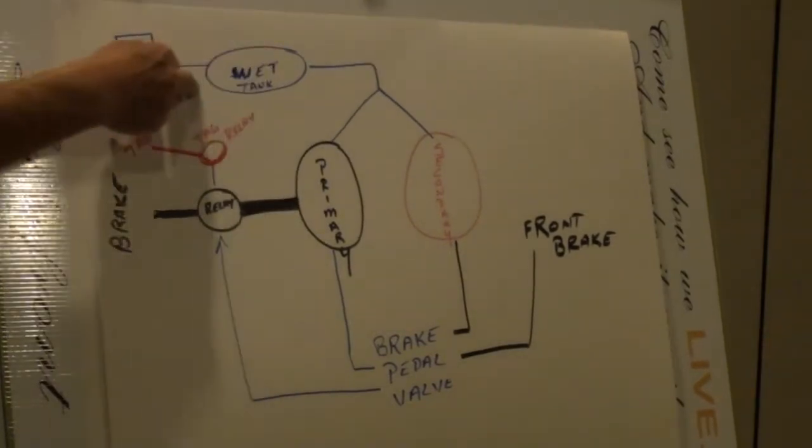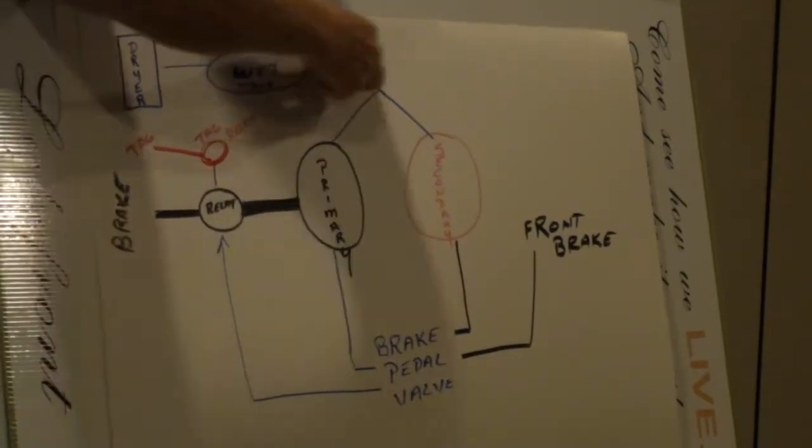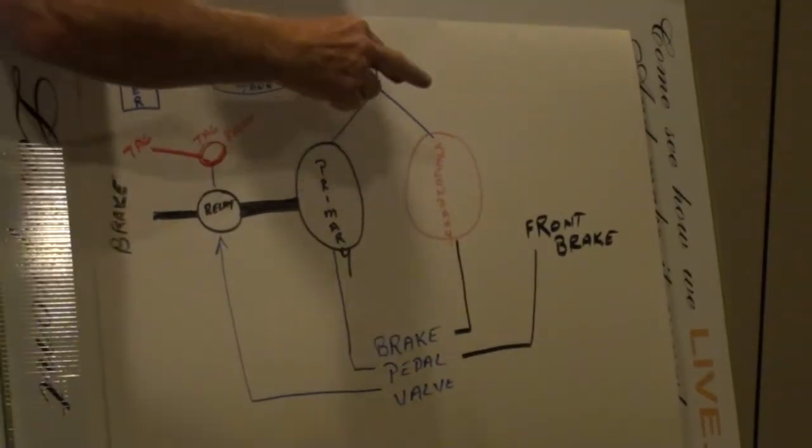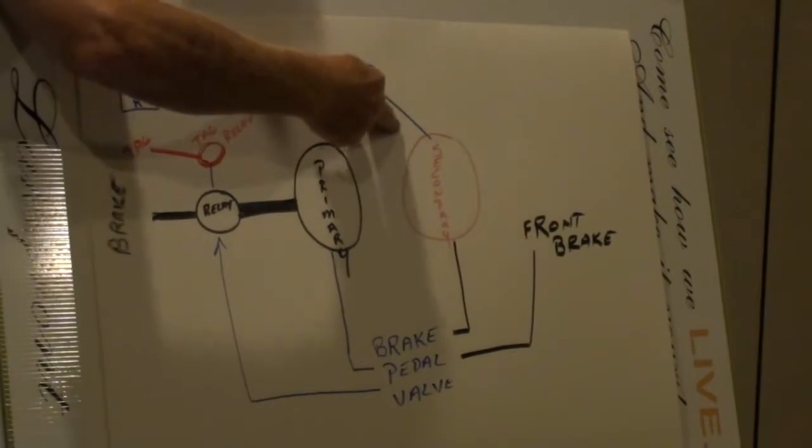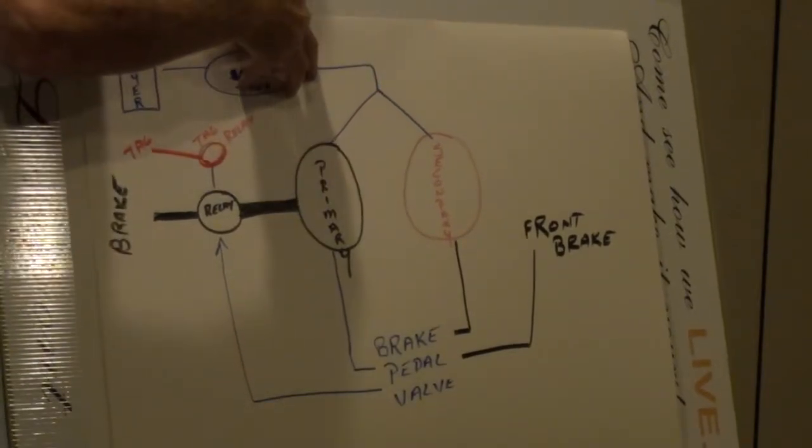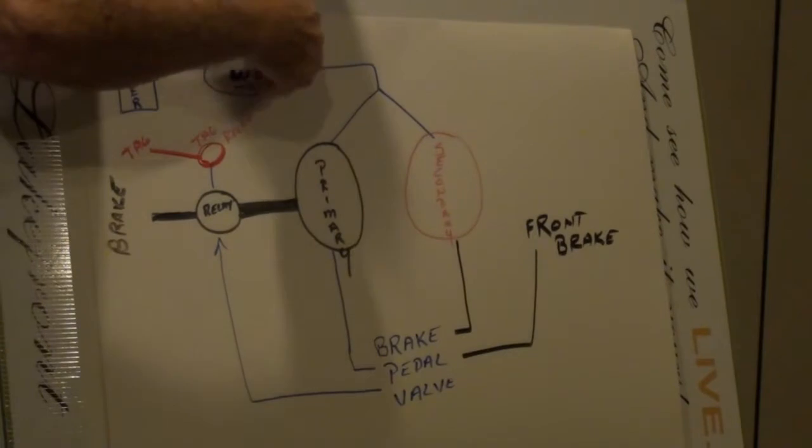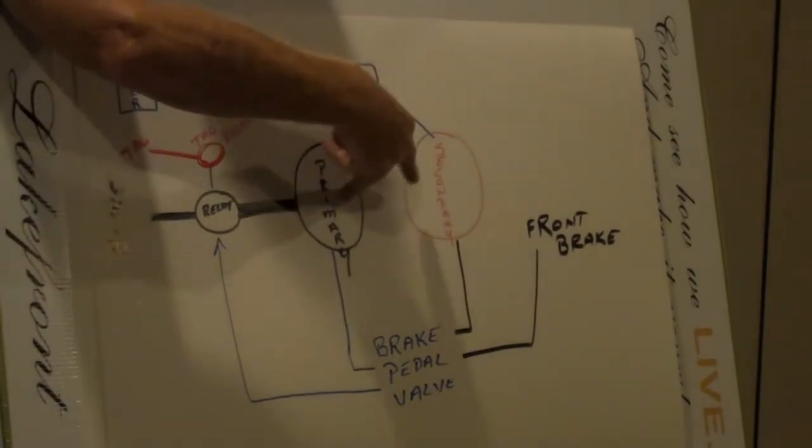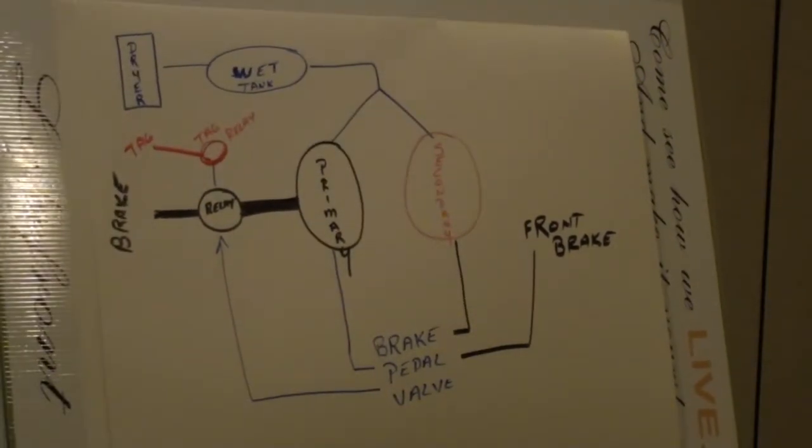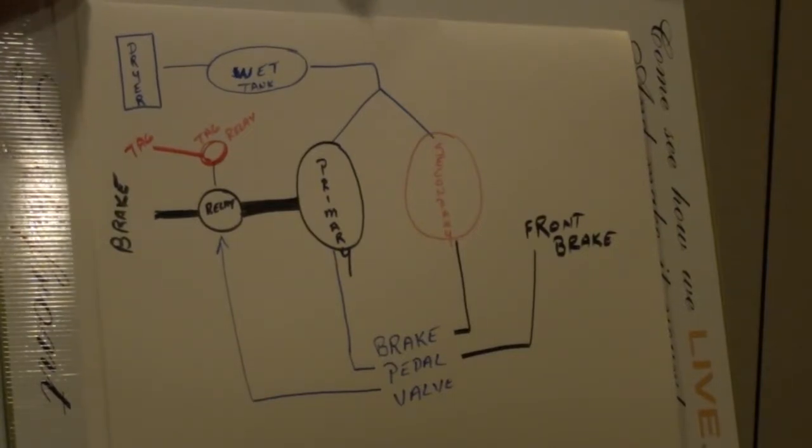So we go to the wet tank. Wet tank comes up and it splits, and there's some manifolding in here. I've drawn an overly simplified schematic of how it really is. But in principle, it goes to the primary and secondary tank. So here's your first air brake question for the non-truck driver. Which axle is the primary braking on a coach, and which is the secondary?